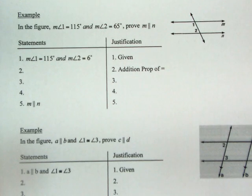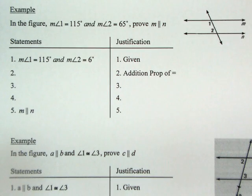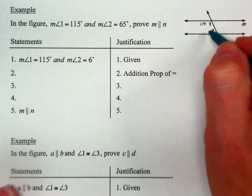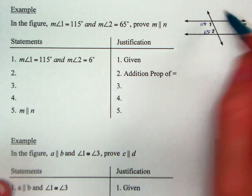Next one. In this figure, let me zoom in a little bit. It says that angle 1 is 115, and angle 2 is 65, we want to prove that M and N are parallel to each other. So that's all my given.